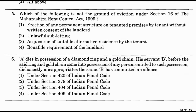Question number 6: A dies in possession of a diamond ring and a gold chain. His servant B, before the ring and chain come into possession of any person entitled to such possession, dishonestly misappropriates the same. B has committed an offence under — option 1: Section 420 IPC, option 2: Section 379 IPC, option 3: Section 404 IPC, option 4: Section 404 IPC. The answer is option 3 — Section 404 of the Indian Penal Code.